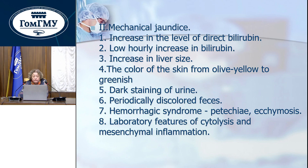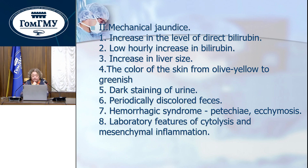Mechanical jaundice: increased level of direct bilirubin, low hourly increase in bilirubin, increased liver size, skin color from olive-yellow to greenish, dark staining of urine, periodically discolored feces, hemorrhagic syndrome with petechiae and ecchymoses, and laboratory features of cholestasis and mesenchymal inflammation.